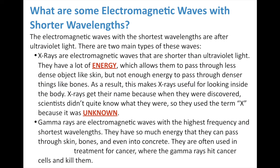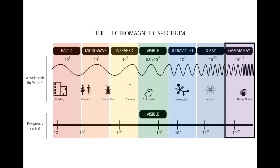Finally, gamma rays are electromagnetic waves with the highest frequency and shortest wavelength. They have so much energy they can pass through skin, bones, and even concrete. Gamma rays are used in radiation treatment, where they hit cancer cells so hard they damage and kill them. Nuclear radiation is so dangerous because it contains a lot of gamma radiation — it travels at high speeds, hits the DNA in cells, breaks it, and causes mutations. We focus gamma radiation to break apart cancerous cells and kill them. Their wavelengths are about the size of an atomic nucleus.